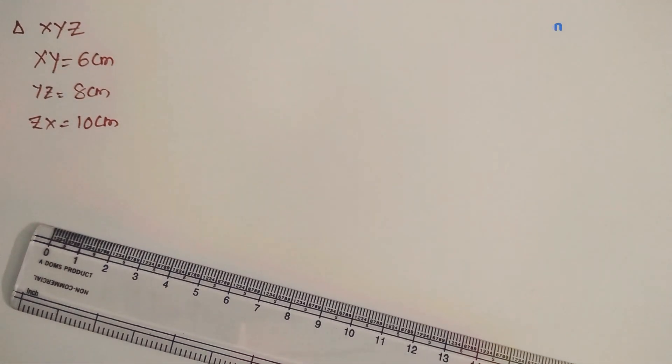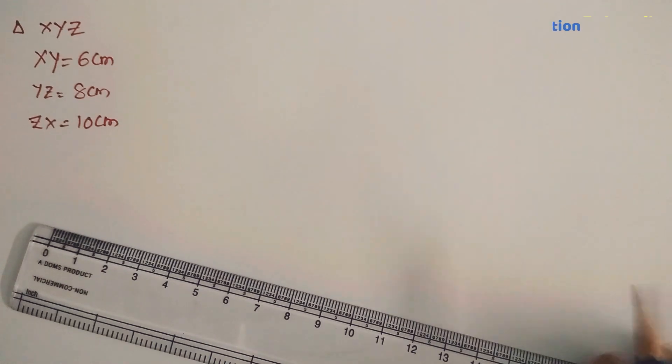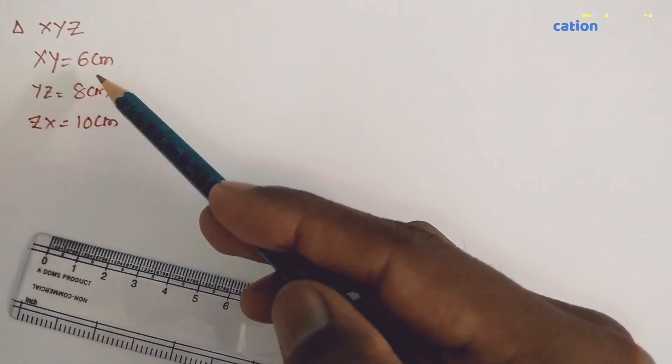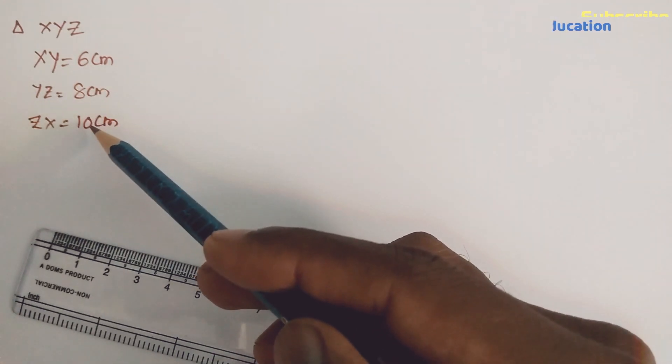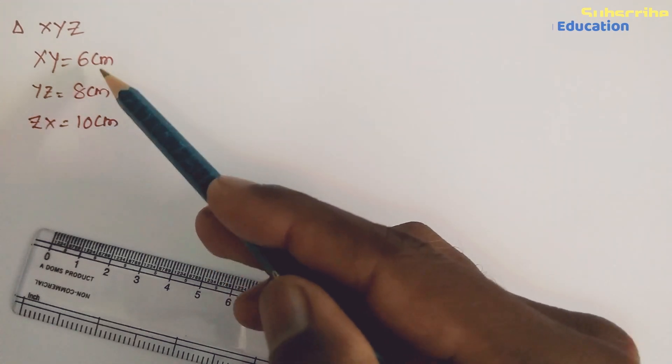Hello viewers, in this module we are going to discuss how to construct triangle XYZ with the given measurements. It's better to start with ZX as the base—that is 10 centimeters—rather than 6 centimeters or 8 centimeters, because it is somewhat longer and easier to draw a line than to draw an arc.